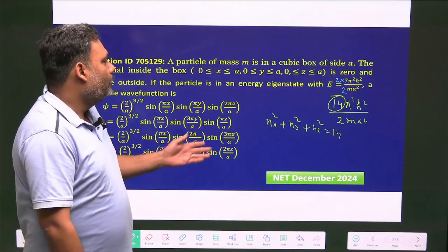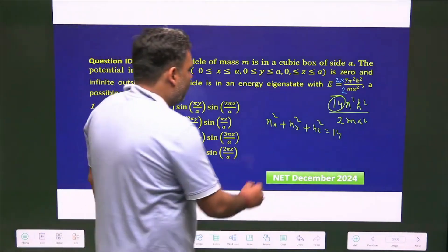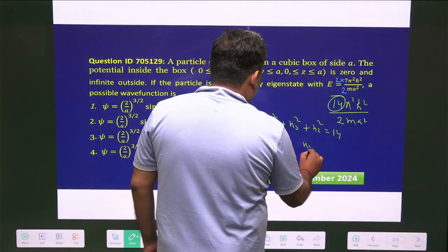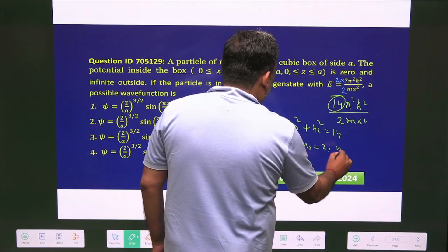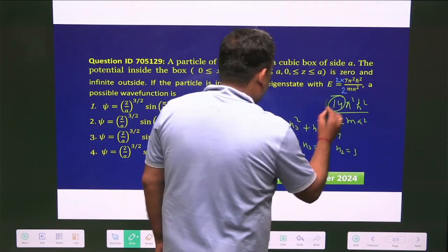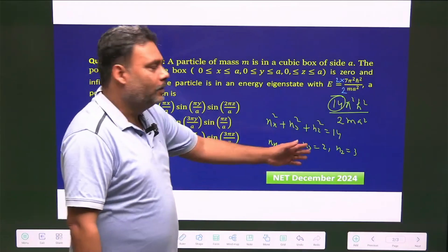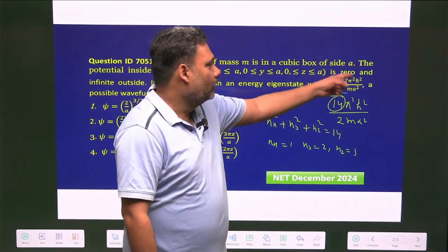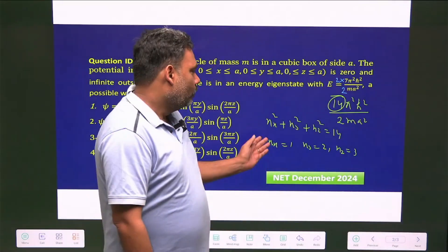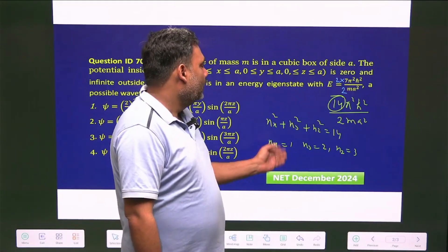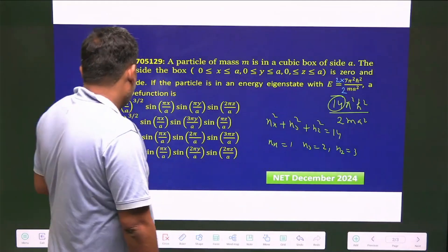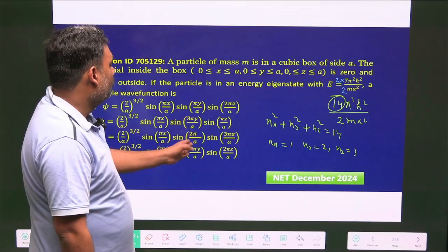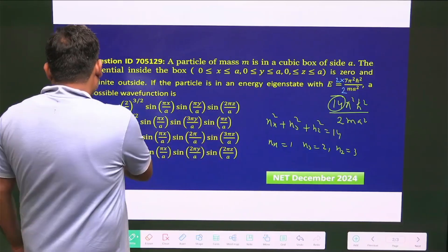nx=1, ny=2, nz=3. Any combination of this will give you this particular energy eigenvalue. Once you identify what are the nx, ny, and nz, you can easily find that only one option has nx=1, ny=2, nz=3. Option three is the correct answer. In the JAM exam, they asked about the degeneracy.